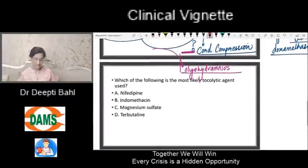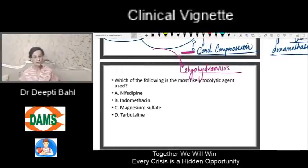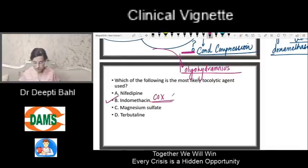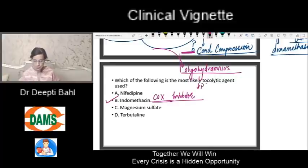Let's see the options. Among the options given — nifedipine, indomethacin, magnesium sulfate, and terbutaline — which tocolytic agent can cause oligohydramnios? The answer is indomethacin. Indomethacin is a non-selective COX inhibitor. It reduces prostaglandin production and that is how it inhibits preterm labor.